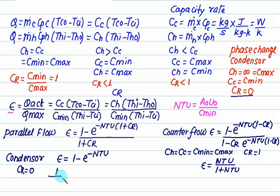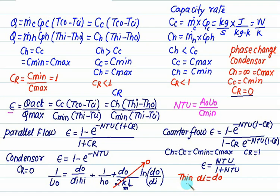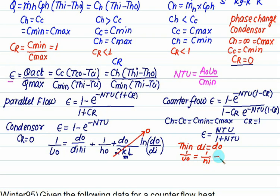The overall heat transfer coefficient is given by: 1/U0 equals (do divided by di times hi) plus (1/ho) plus (do divided by 2k) times ln(do/di). Here k is the thermal conductivity of the pipe. If thermal conductivity is not given, that term equals zero. If the tube is thin, set di equal to do, in which case 1/U0 equals 1/hi plus 1/ho.